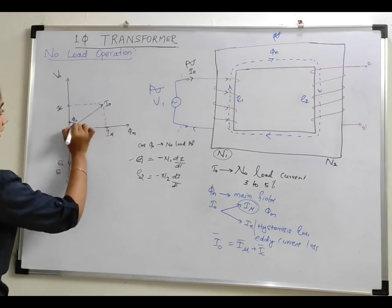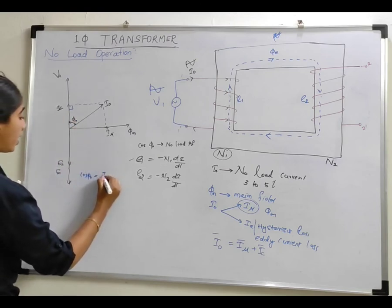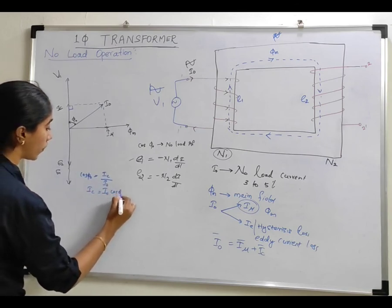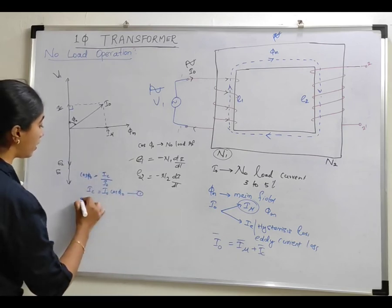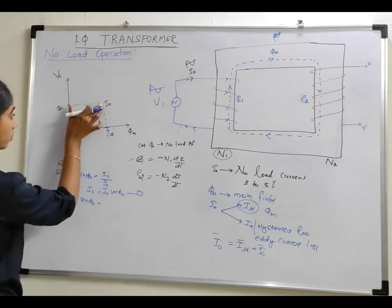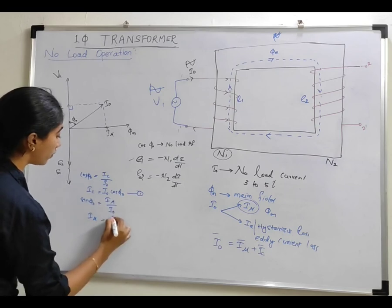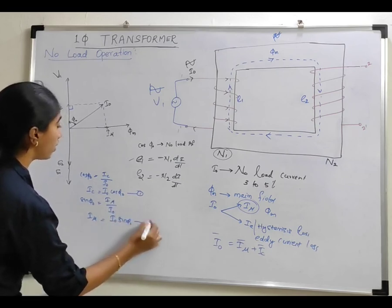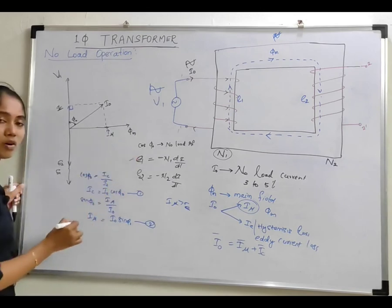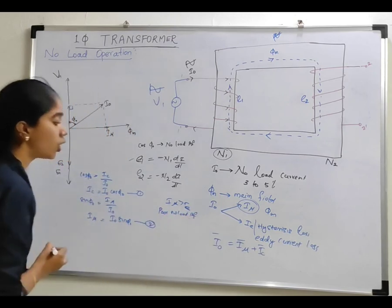From the phasor diagram, considering the right-angle triangle and writing cos φ0 — which is the adjacent side divided by the hypotenuse I0 — I can write: Ic = I0 cos φ0. This is equation 1. Similarly, writing sin φ0, which is the opposite side Iμ divided by the hypotenuse I0, I can write: Iμ = I0 sin φ0. You can see that Iμ will always be greater than Ic, meaning the no-load power factor will always be poor — poor no-load power factor for a single-phase transformer.